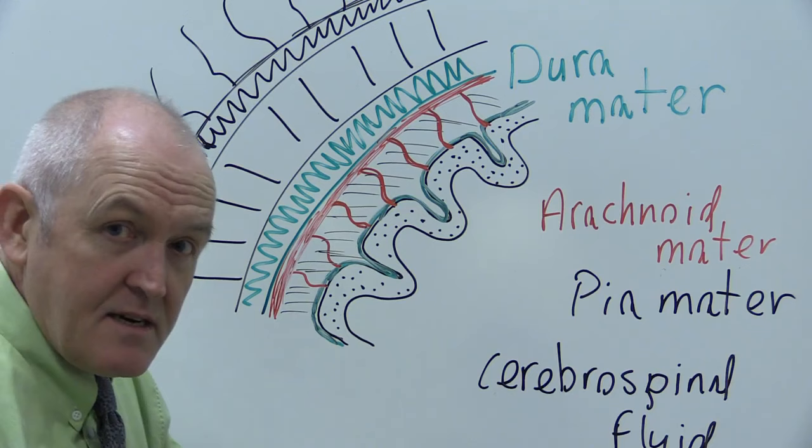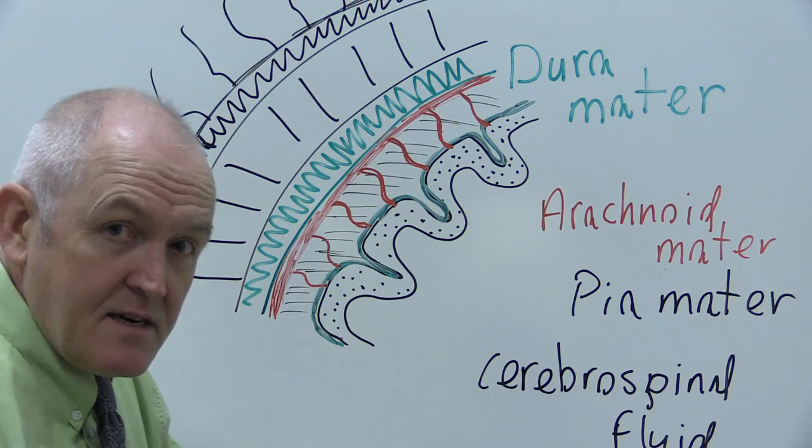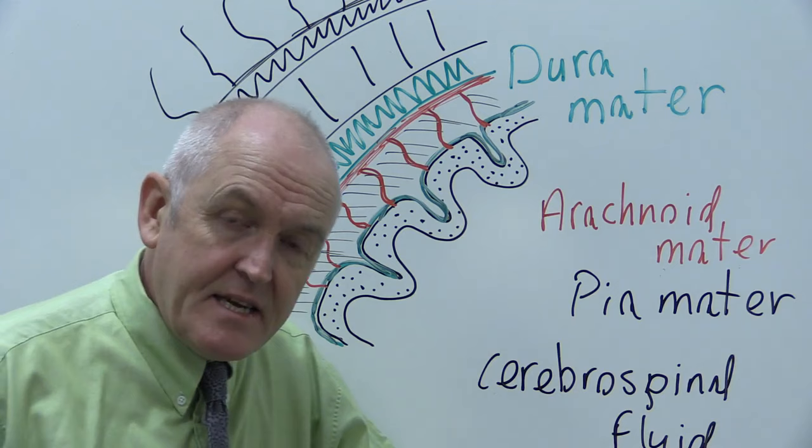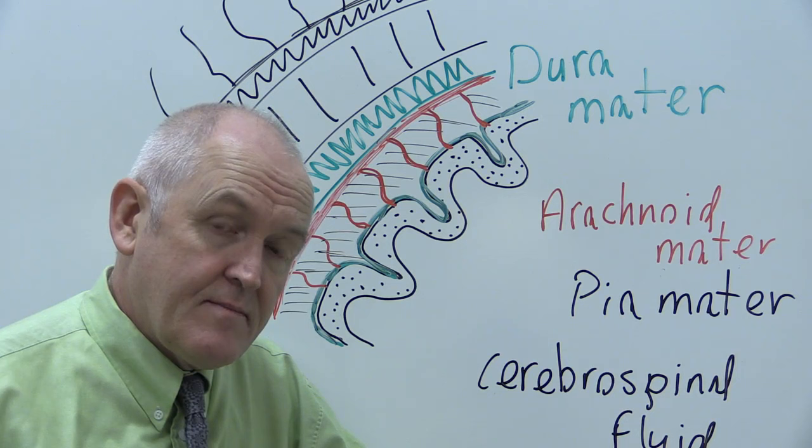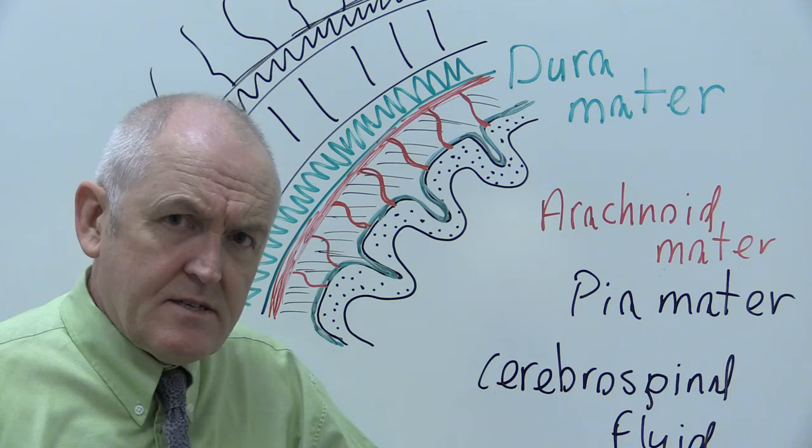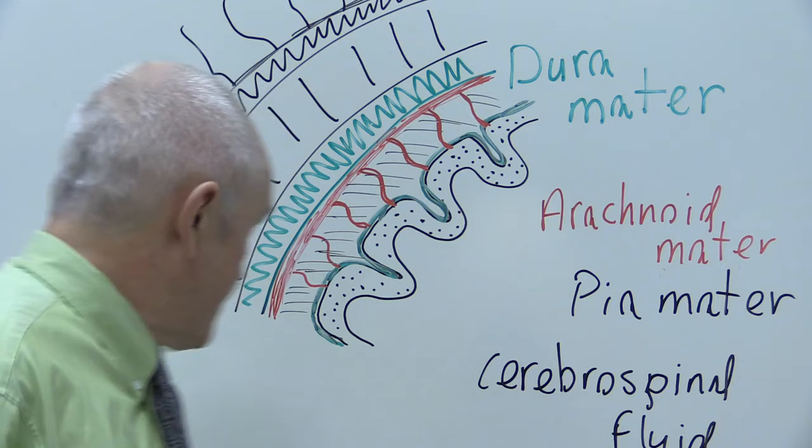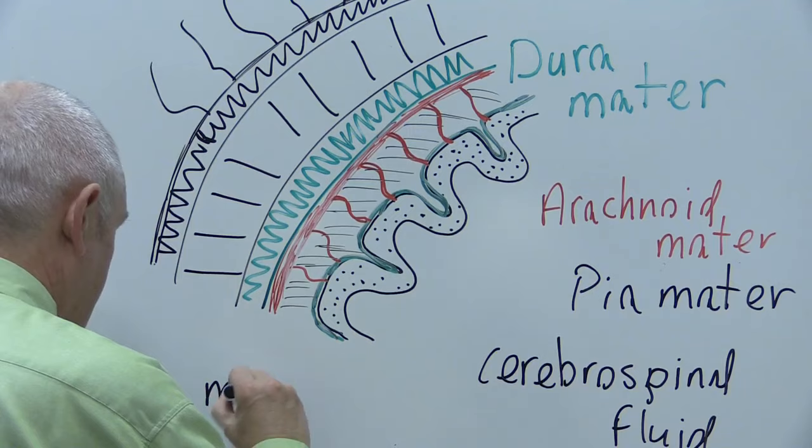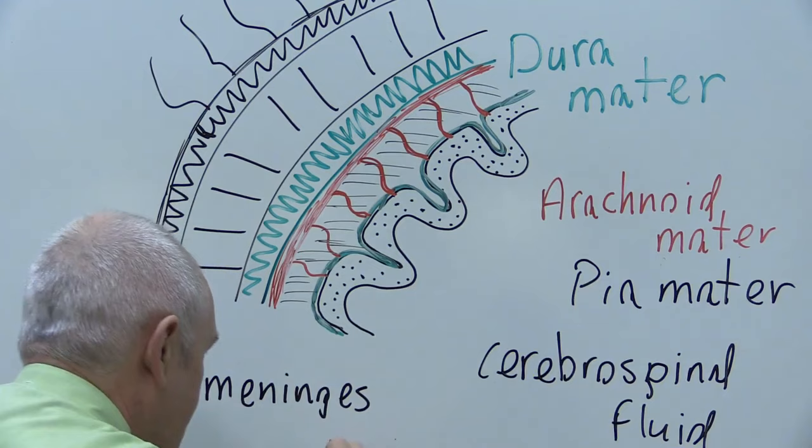Collectively, the dura mater, the arachnoid mater, and the pia mater are described as the meninges, the meningeal layers. If they become infected, that's meningitis, which is very serious. The meningeal layers pad the brain to stop it getting damaged.